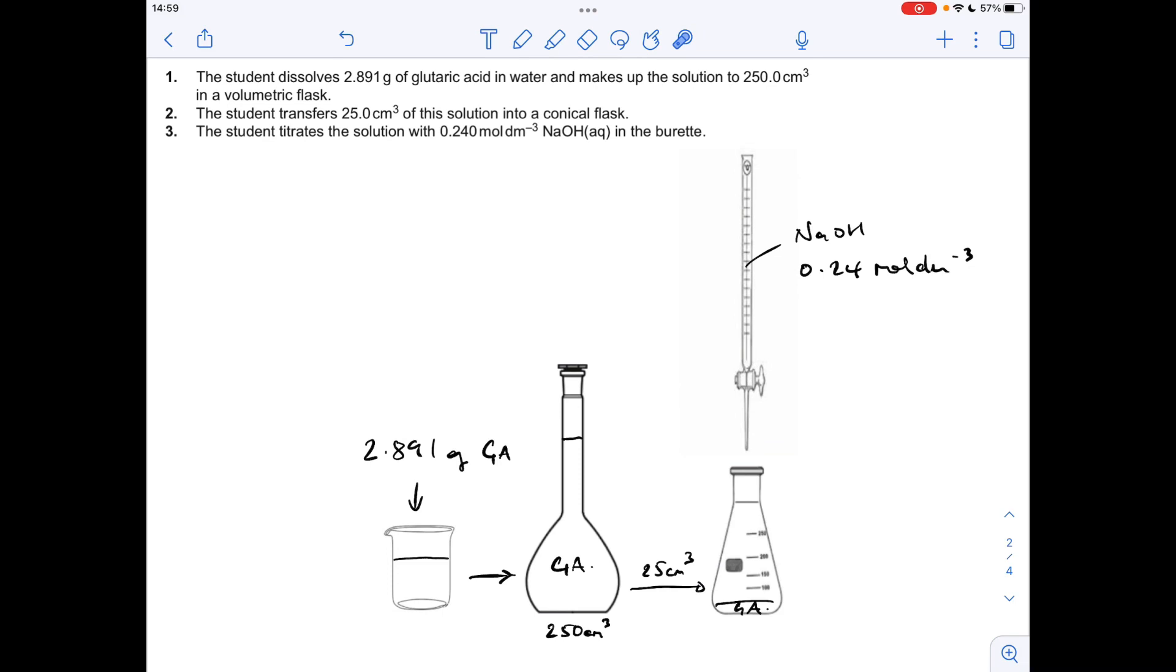So make a start. You'll notice I've got my trusty diagram on the screen already with some information already on. The student has dissolved that many grams of glutaric acid into some water, that's being transferred into this volumetric flask, 250 cm cubed, and then 25 cm cubed is being taken out and put into the conical flask. So the acid is in the flask to start with, and then they've titrated that using this sodium hydroxide solution with that concentration.